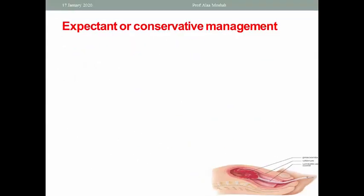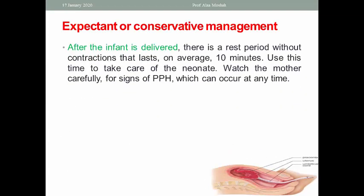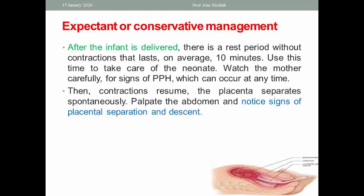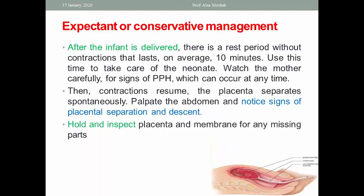Regarding expectant or conservative management: after the infant is delivered, there is a rest period without contractions lasting on average 10 minutes or less. Use this time to care for the newborn and watch the mother carefully for vital signs and signs of postpartum hemorrhage, which can occur at any time. Contractions then resume, the placenta separates spontaneously, and you notice the signs of placental separation and descent. Hold and inspect the placenta and membranes for any missing parts.